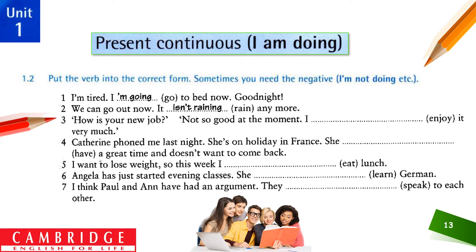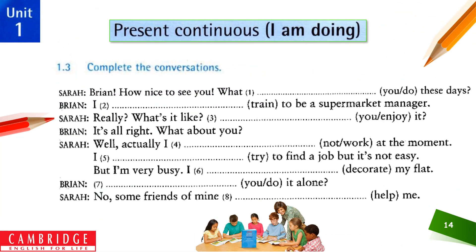Exercise 1.2: put the verb into the correct form — sometimes you need the negative. You need to find out which sentence requires negative and which requires affirmative. First sentence: 'I am tired, I am going to bed — good night.' Second sentence: 'We can go out now, it isn't raining anymore.' You need to understand the context and write accordingly. At the intermediate level, grammar is completely based on understanding the situation — context is very important and we are applying contextual knowledge.